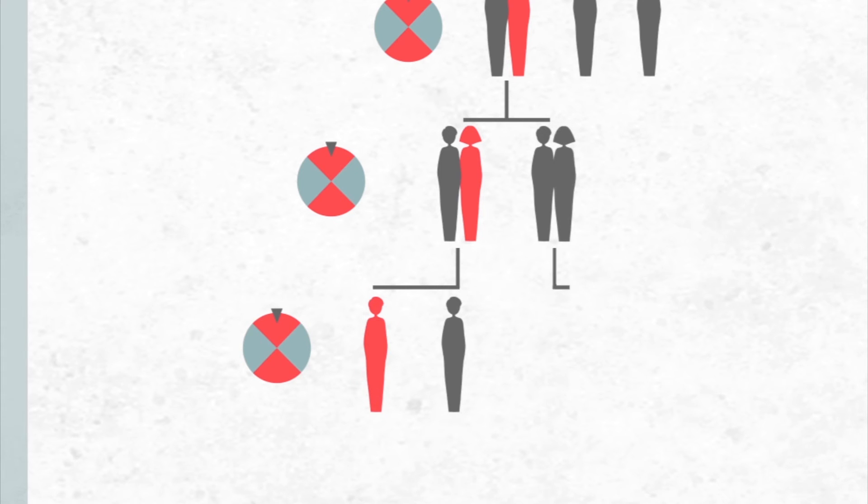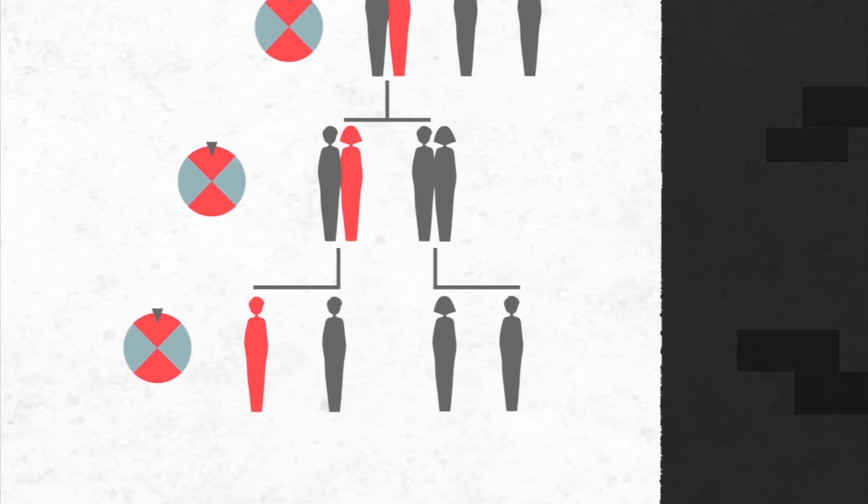If you didn't inherit the faulty gene, there is no chance that you can pass the fault on to your own child. Breast cancer genes cannot skip generations.